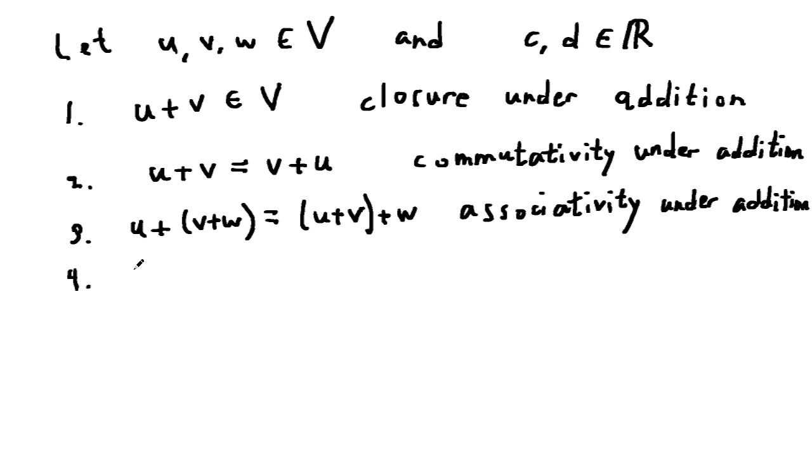The fourth property is that there is a zero vector, denoted like this, such that when you add it to u, you just get back u.